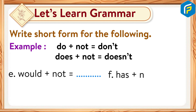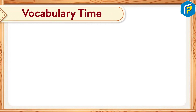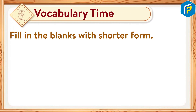E: would plus not equals wouldn't. F: has plus not equals hasn't. G: is plus not equals isn't. H: are plus not equals aren't. Vocabulary time — fill in the blanks with the shorter form.